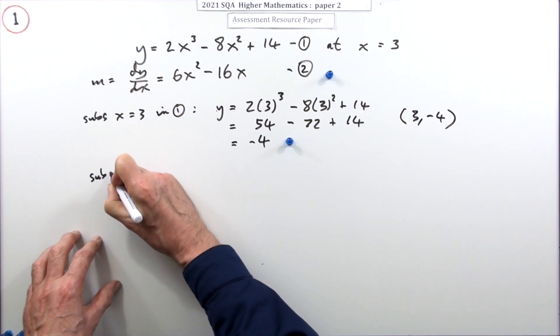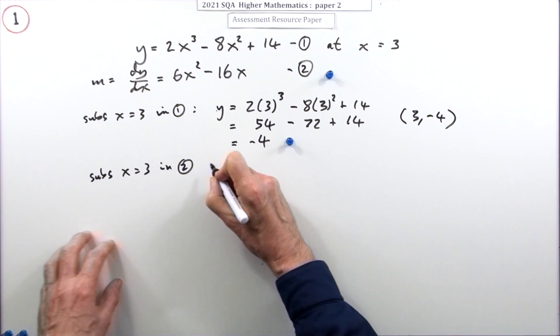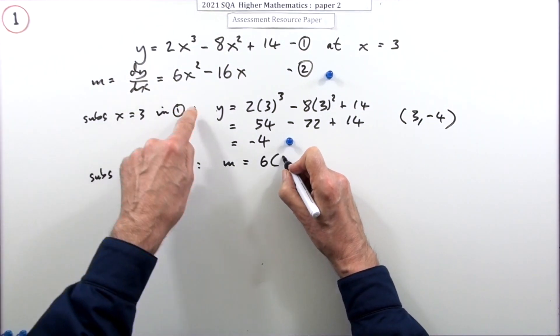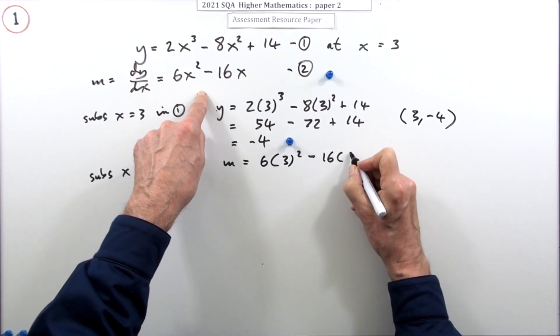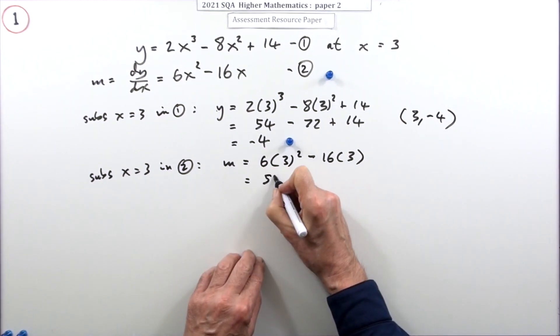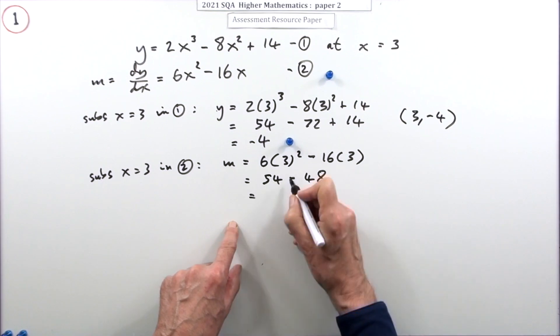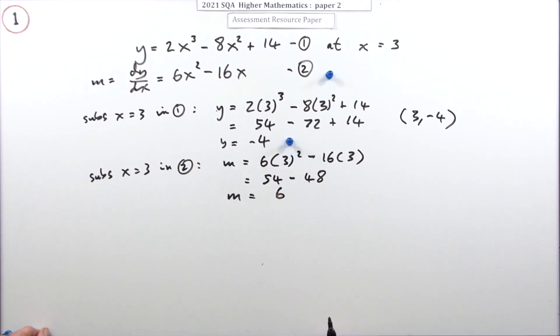Now I'm going to substitute x equals three in equation two, thereby getting the gradient. x equals three in equation two: 6 times 3² minus 16 times 3. So 6 nines, that's 54, and that's 48, so that gives me six. So now the gradient is six. Getting the gradient of six is worth the mark.